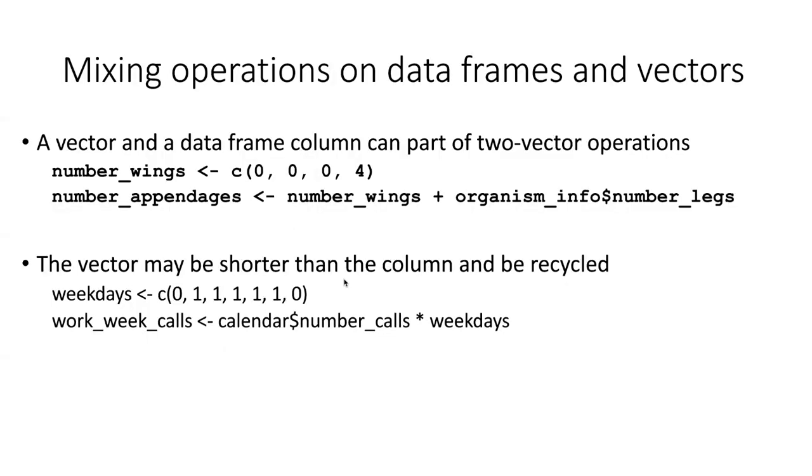If we want to perform an operation where the vector is not the same as the number of rows in the column, then the recycling process that I described will happen. So in this example, we have a table that is the number of telephone calls that were made on each day of the month. And if we want to screen those out to find only the calls that were made on weekdays, we can create a vector where zero is for Sunday and Saturday, the weekend days. And then Monday, Tuesday, Wednesday, Thursday, and Friday all have ones. Those would be the weekdays. If we apply this vector to the table by multiplying the weekday vector times the column with the number of calls in it, we can come up with a vector that only includes calls that were made on weekdays.